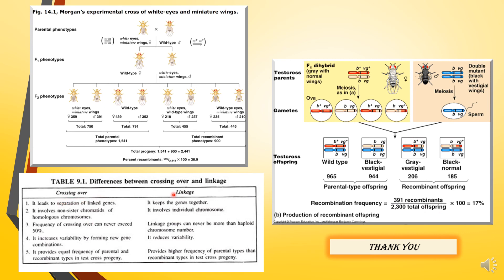What is the difference between crossing over and linkage? Crossing over leads to separation of linked genes — the genes placed side by side get separated, producing new combinations such as B+ and VG together. In linkage, genes are kept together — capital B+ and VG+ pass on together from one generation to another. Crossing over involves non-sister chromatids of homologous chromosomes, while linkage involves individual chromosomes.